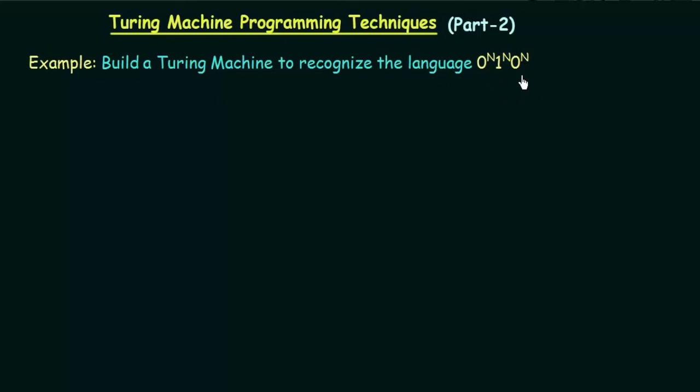We have already discussed about this when we studied the pumping lemma for context-free languages. If you have not watched that lecture, you can watch it — it is the first example we discussed in pumping lemma for context-free languages. Since we cannot design this using pushdown automata, as it is not a context-free language, we will try to build it using a Turing machine. We know that Turing machines are much more powerful than pushdown automata.